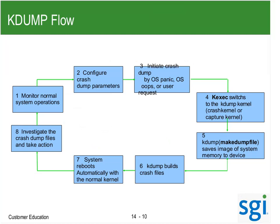Basically we have a normal operating system, we configure our crash dump parameters, and we get a crash dump initiated by a panic — an oops and a panic are the same thing — or an operator/administrator request. KExec then switches to the kdump kernel, and during the boot process kdump saves an image of the system to disk and builds the crash directory files. One nice thing is they save the crash command and the kernel — you don't get just the dump — so an engineer doesn't have to recreate the same kernel to match symbol tables. Then the system reboots automatically with the normal kernel.